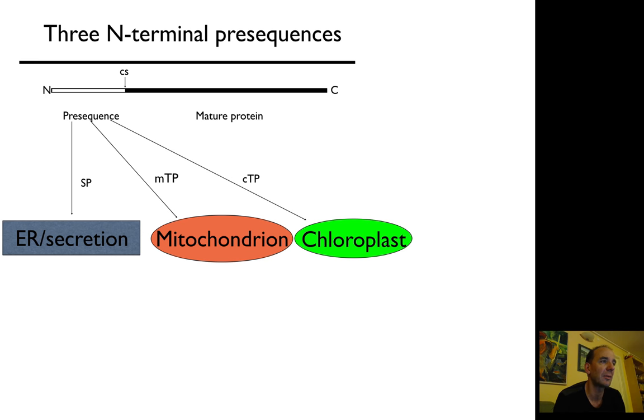They have what's called an N-terminal presequence. The signal peptide is for ER secretion. For mitochondria, it's called a mitochondrial targeting peptide. For chloroplast, it's called a chloroplast transit peptide. They are all N-terminal signals terminated by cleavage signals, with the mature protein following.